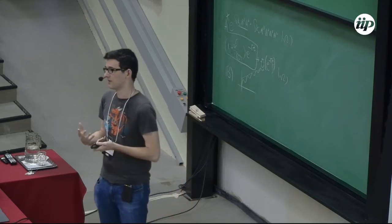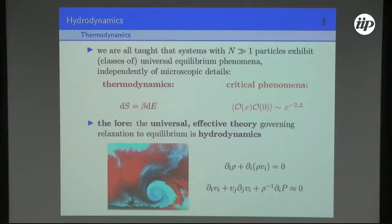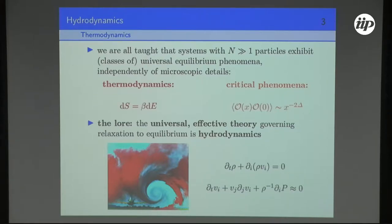What I'm interested in today is not universality classes of zero-temperature behavior in quantum systems, but the dynamics and universality class of finite-temperature quantum systems. The lore is that the universal effective description for finite-temperature ergodic quantum systems is a theory called hydrodynamics. This is something we're all very familiar with — it's how airplanes fly. The equations of hydrodynamics are deceptively simple classical partial differential equations, and the goal of this talk is to give some intuition for how these equations are secretly contained in the Schrödinger equation.